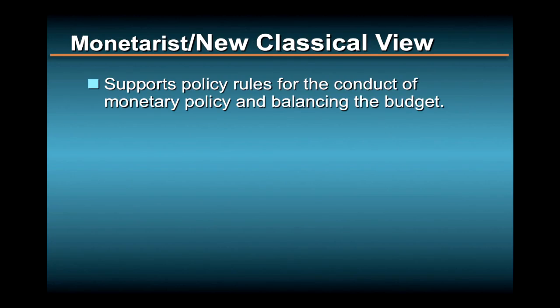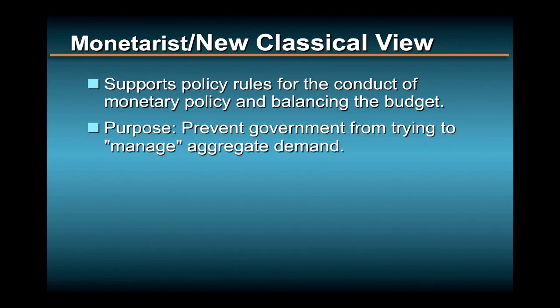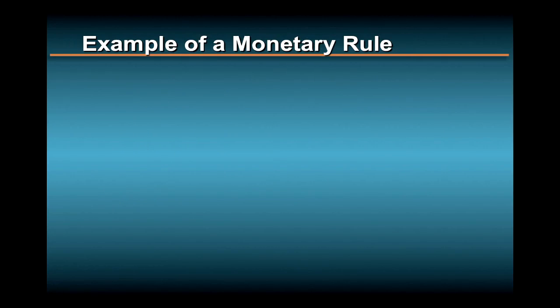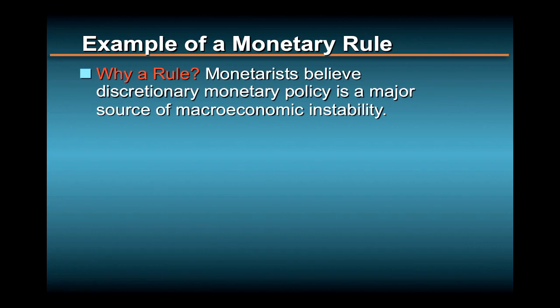Let's start with the monetarist and new classical arguments in support of policy rules for the conduct of monetary policy and balancing the budget. The purpose of such rules is to prevent government from trying to manage aggregate demand. In this view, such management is misguided and thus likely to cause more instability than it cures. For the monetarist, the enactment of a monetary rule makes the most sense, because monetarists believe inappropriate monetary policy is the major source of macroeconomic instability.